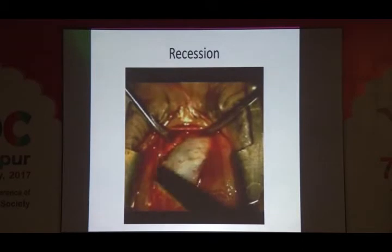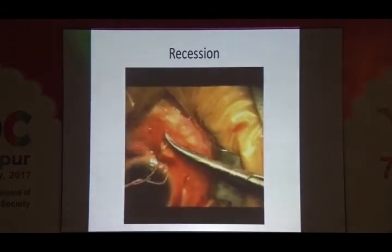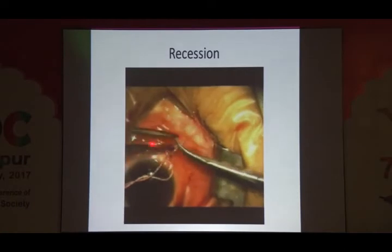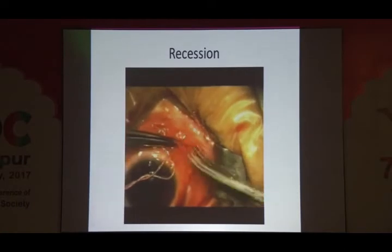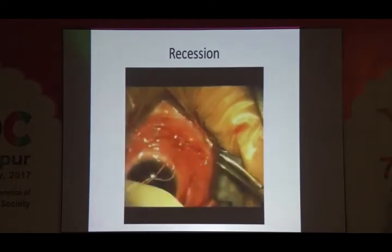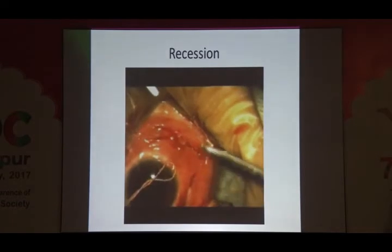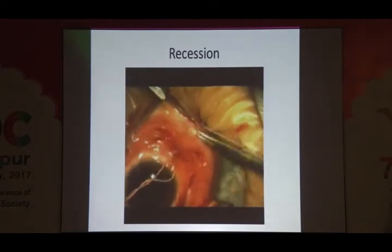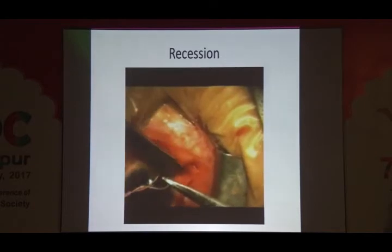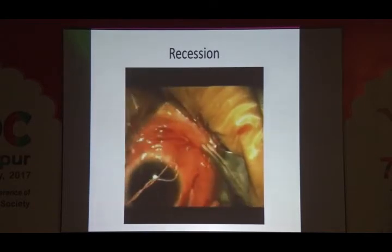Here we are cutting away the sutures. Always do a force-duction test once before you close and after you close. Now we are doing an end-to-end apposition of the conjunctiva using 8-0 vicryl sutures — an important step. You don't want any tenons to be prolapsing through. It should be an end-to-end apposition for the best cosmetic results. That completes the fornix-based recession.